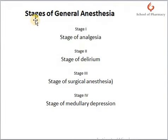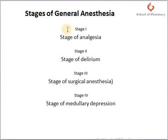There are some stages of general anesthesia. When an inhalation anesthetic is administered to a patient, there are stages produced by increasing the blood concentration of that agent, and anesthesia is produced.